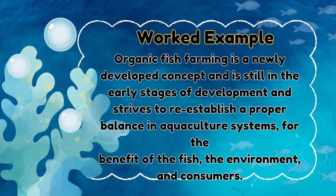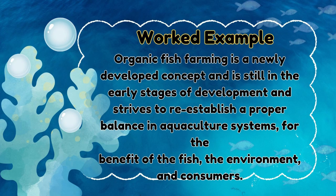Organic fish farming is a newly developed concept, still in the early stages of development, and strives to re-establish a proper balance in aquaculture systems for the benefit of the fish, the environment, and consumers. The feed, mainly consisting of fish meal, cereal-based products, vitamins, and minerals, should be organically produced. It is not an easy task to remove the level of organochlorine pollutants in marine fish used for conversion into fish meal. Fish fed with natural ingredients from certified organic agriculture and sustainable fisheries feeds are particularly formulated to match exactly what the fish would eat in the wild.